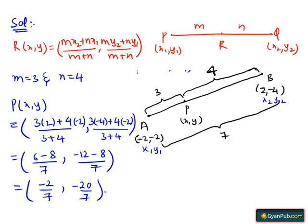Hence, the coordinates of the point P are (-2/7, -20/7).